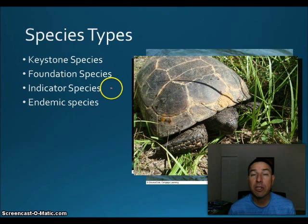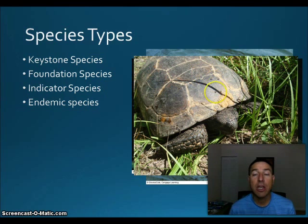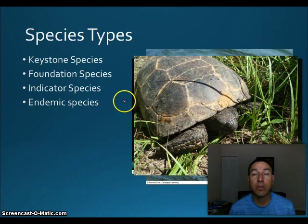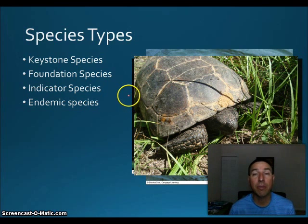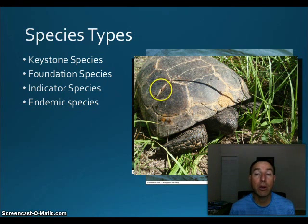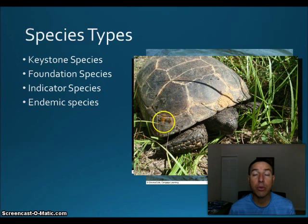Endemic species are those naturally found in an area and have been there for ages. An example is the gopher tortoise in Florida's sandhill scrub areas. As we tend to move species around, endemic species become fewer over time. They usually stay in a small area with a narrow range, and are the true native species.